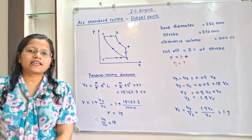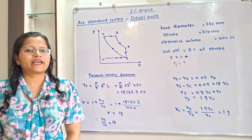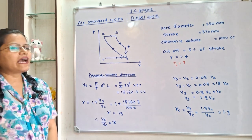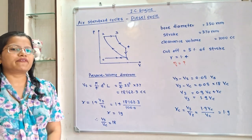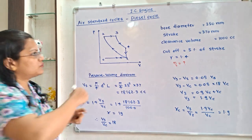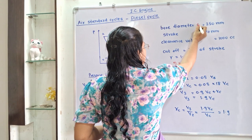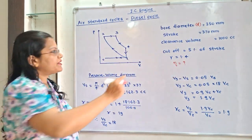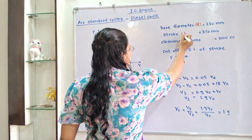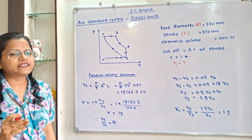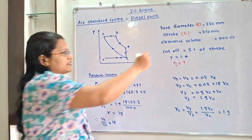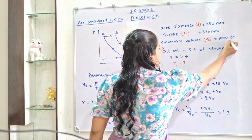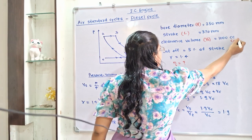Let us understand the given data with the help of a pressure-volume diagram of the diesel cycle. Bore diameter (d) is given as 250mm. Stroke (L) is given as 370mm. Clearance volume Vc is 1000cc — that means centimetre cube.